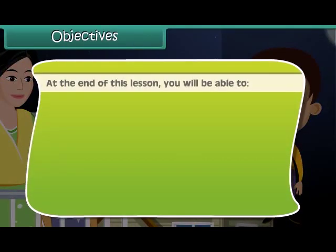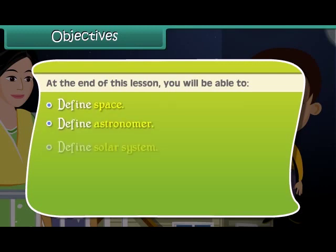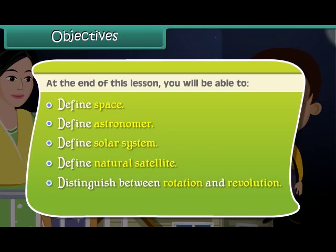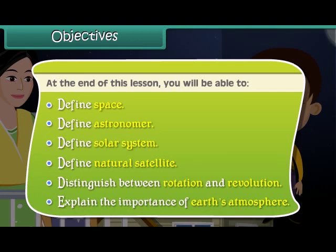At the end of this lesson you'll be able to: define space, define astronomer, define solar system, define natural satellite, distinguish between rotation and revolution, and explain the importance of Earth's atmosphere.